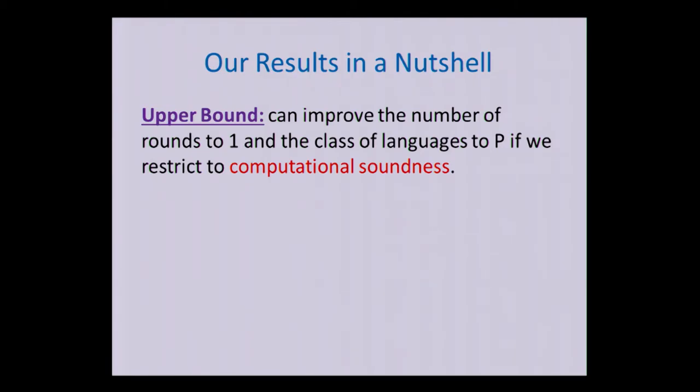But this does come at a cost. So in the RVW result, soundness was unconditional. So for every X that was far from the language, no matter what the cheating prover did, the verifier should reject with high probability. Here we're going to restrict only to computational soundness. So we're only going to care about cheating servers that run in polynomial time. In particular, they can't break crypto.